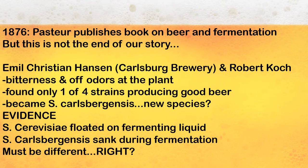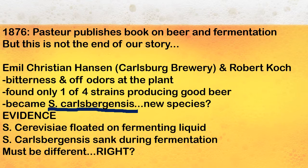In the late 1800s, Pat Stewart published a significant book on beer and fermentation. Emil Christian Hansen, who worked at the Carlsberg Brewery, and his friend Robert Cook were walking through the plant one day and sampling the goods. There was a bitterness in the product and some off-odors going on. Three-fourths of the product wasn't good because only one of the four strains they were using was producing good beer. That strain became Saccharomyces carlsbergensis. Whether it's a new species — well, maybe, maybe not.